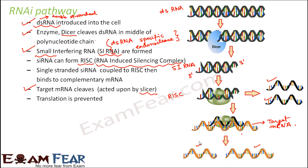Some of the cleaved mRNA pieces can also act as a template for RNA polymerase, which then creates a complementary strand giving rise to the formation of double-stranded RNA. This double-stranded RNA can again act as a substrate for the enzyme Dicer, and the process can continue over and again. Some slices get destroyed by the cell, while others act as substrate for RNA polymerase to form more dsRNA.